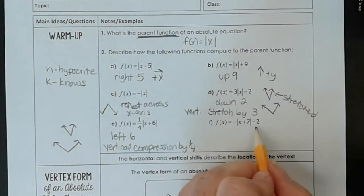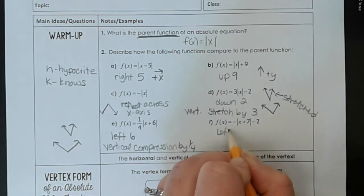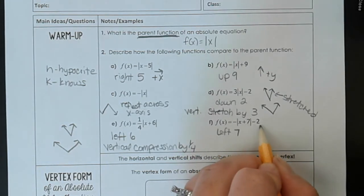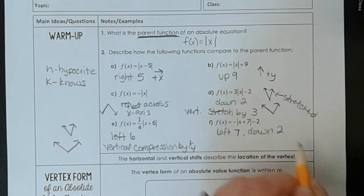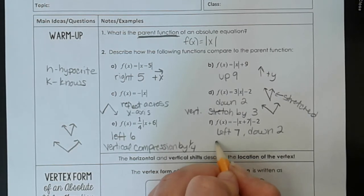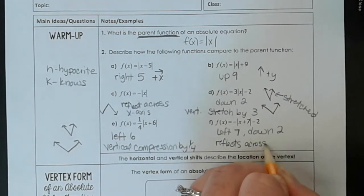Now let's take a look at this one. So here's an h on the inside. And h is a hypocrite. So this goes to the left 7. Now this negative 2 is on the outside. So that's k, which means it affects our y values. So this means it affects our x values. This affects our y values. So this means it goes down 2. Because k knows what's up.